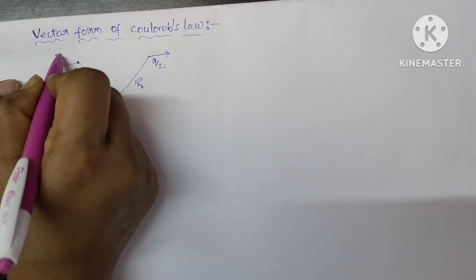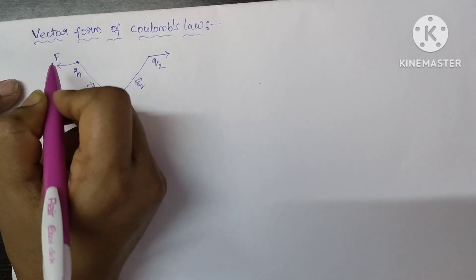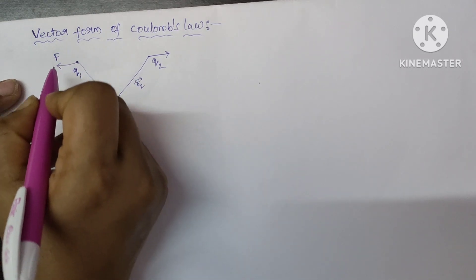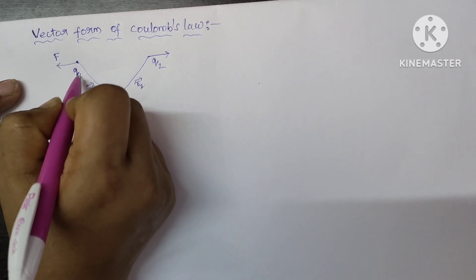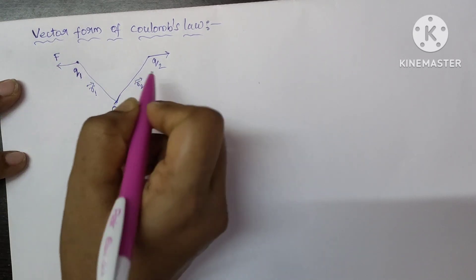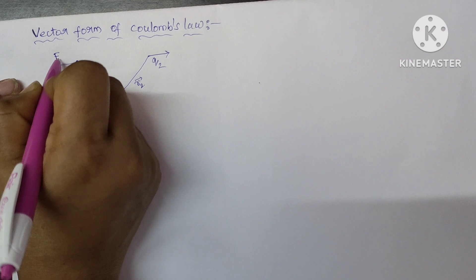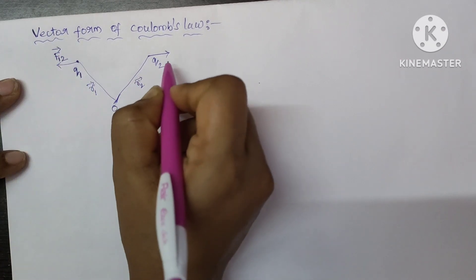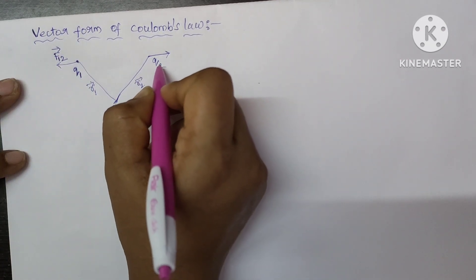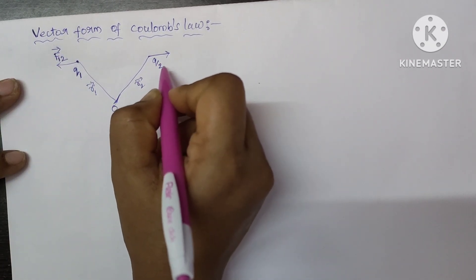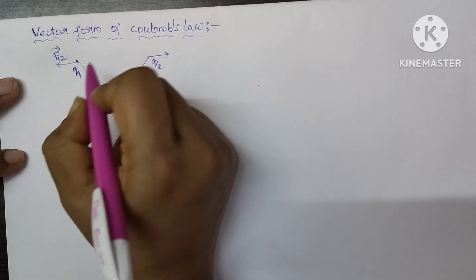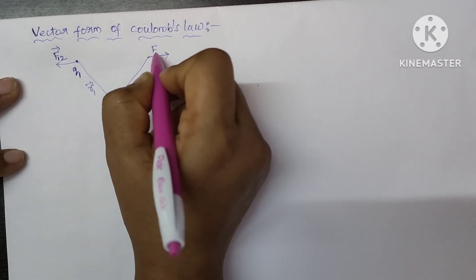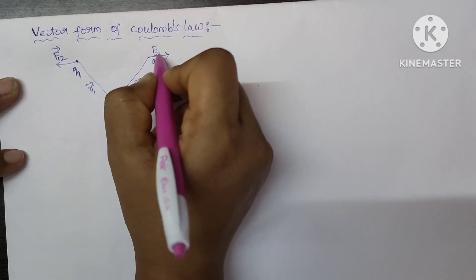So the force acting between these two charges is repulsive force. The force on Q1 due to Q2 will be F12, and the force on Q2 due to Q1 will be F21.